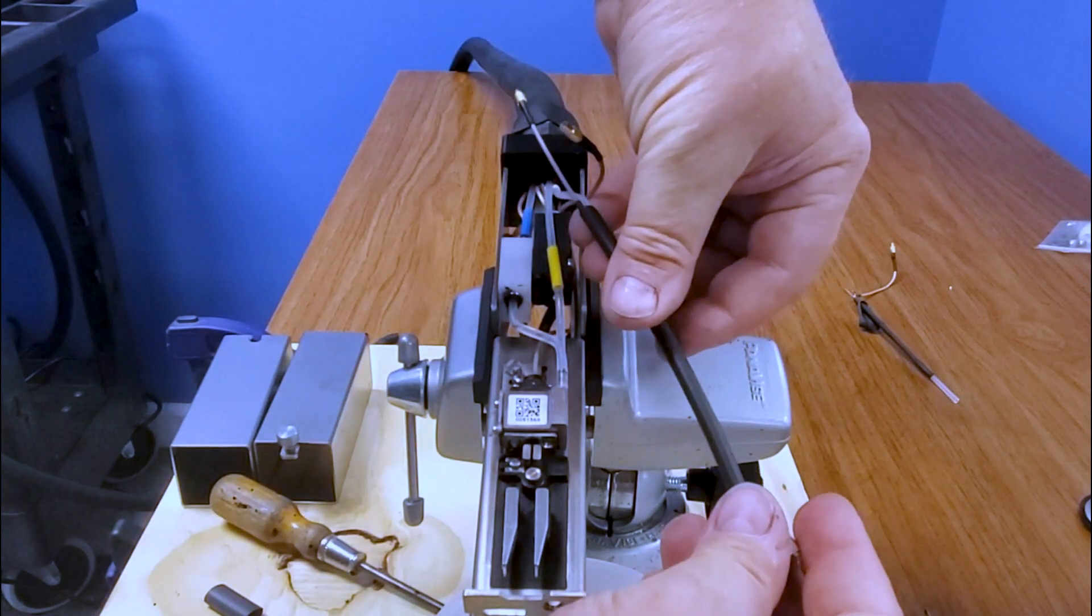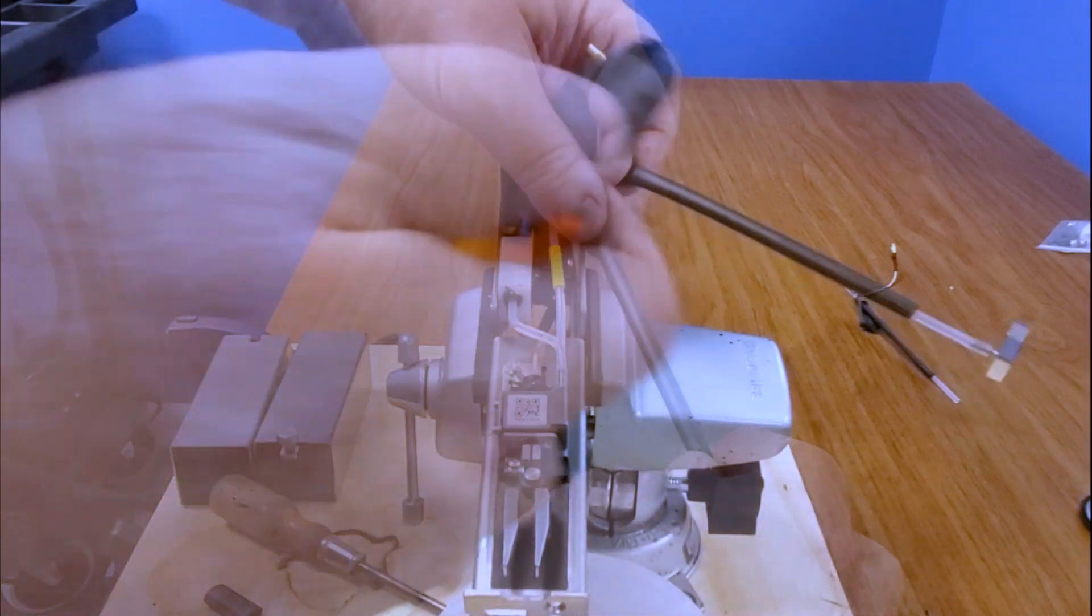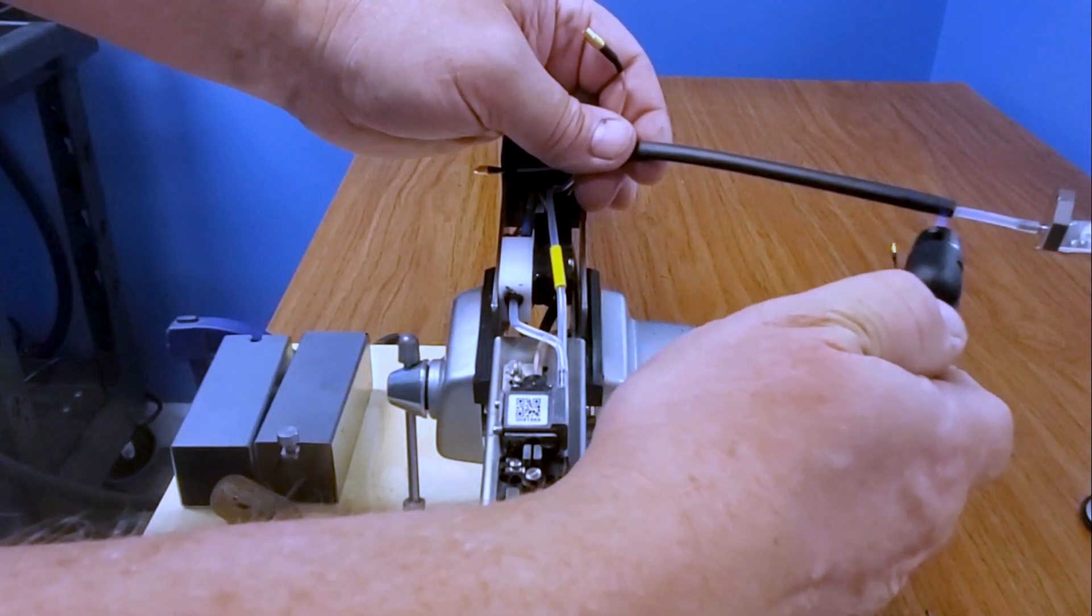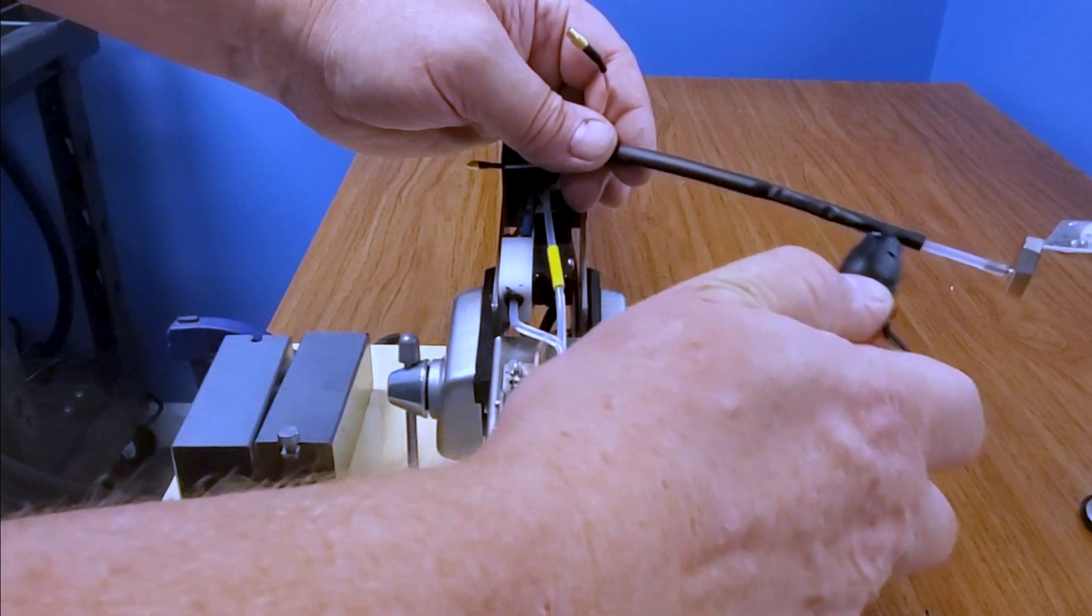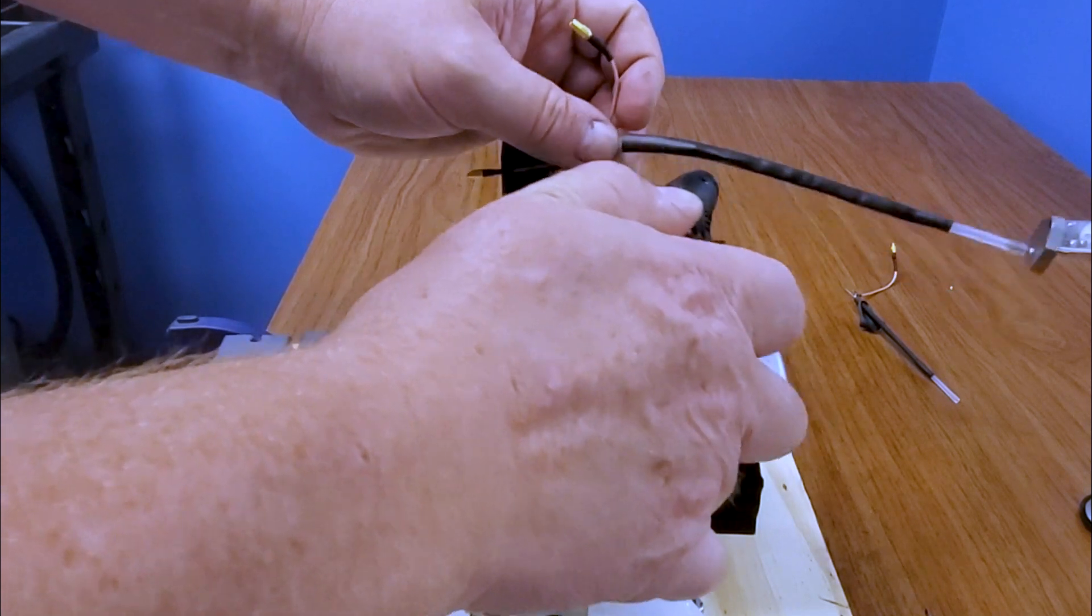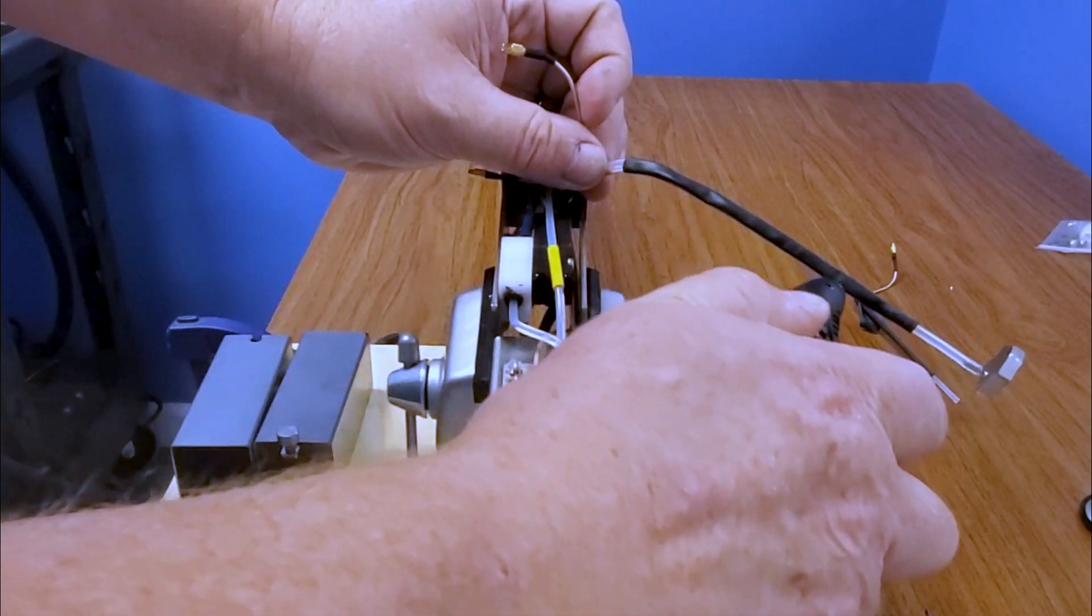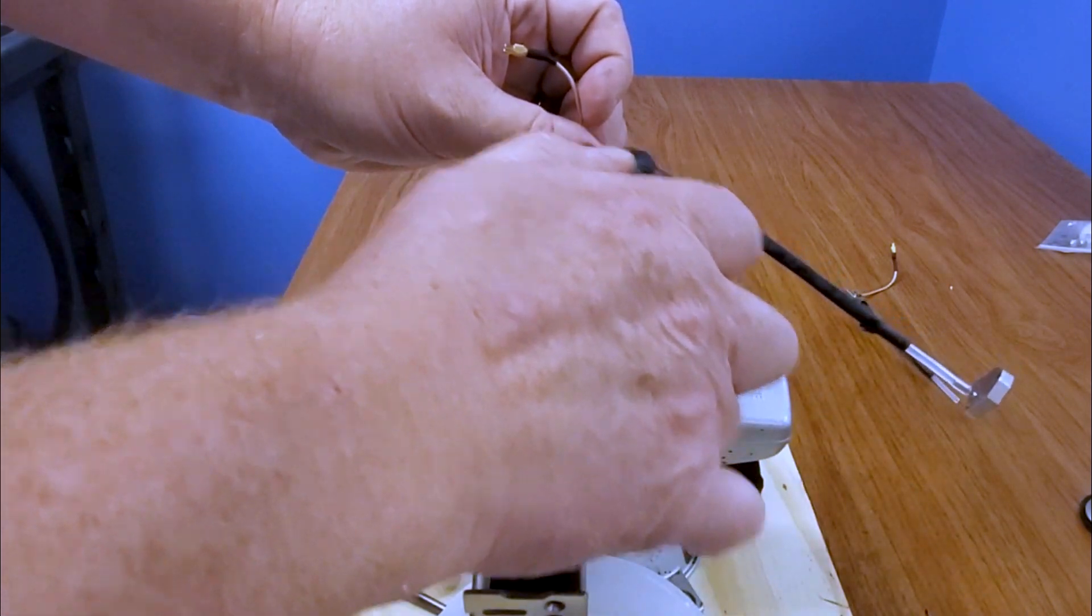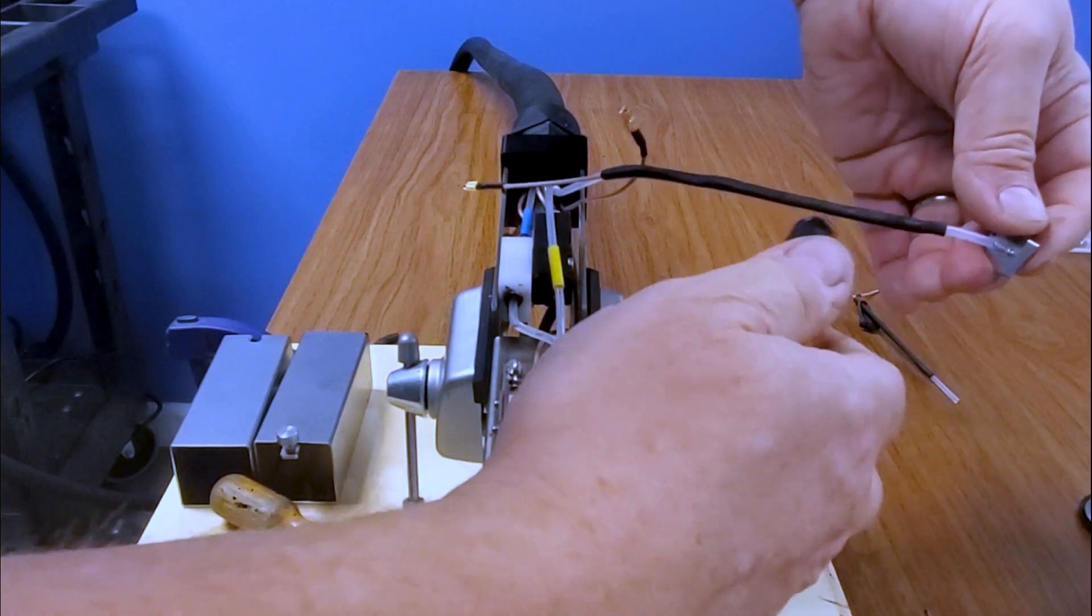We'll pull the heat shrink up to cover where we had just made our connection. Using a lighter, heat shrink gun, or a torch like I'm using here, we're just going to go ahead and heat up the shrink tube and we are going to shrink the tube onto our printhead gutter detect to hold it all in place.